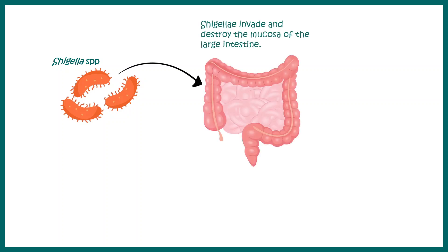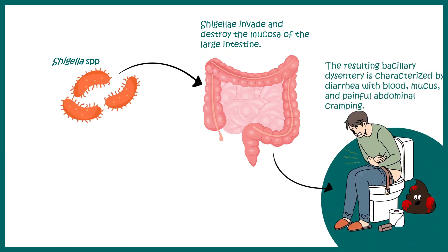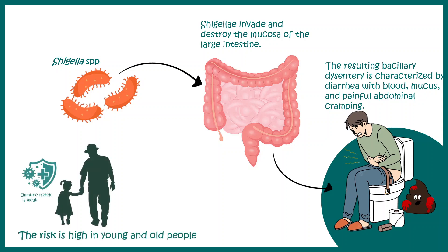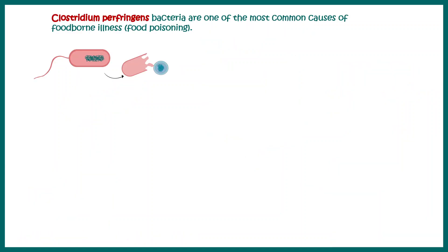Shigella selectively destroys the mucosal lining of the large intestine, leading to bloody diarrhea — that means blood in your stool. Shigellosis is very common in older and younger people because they have a relatively weaker immune system.